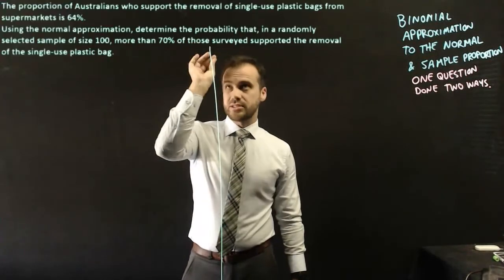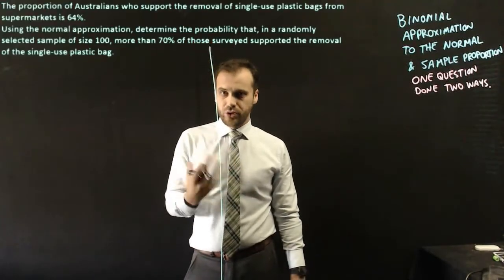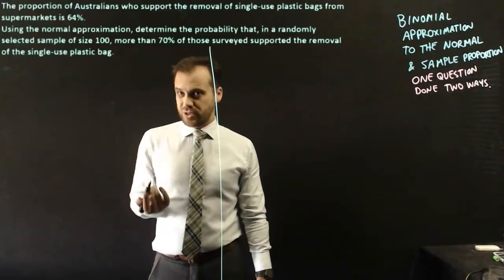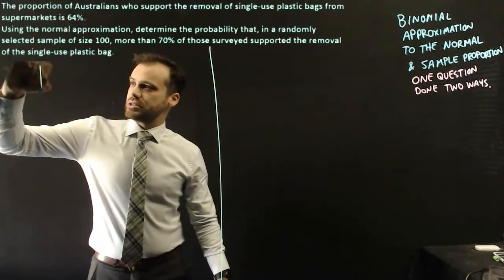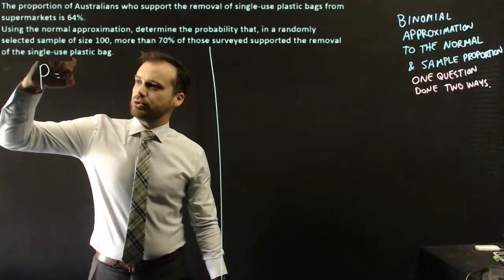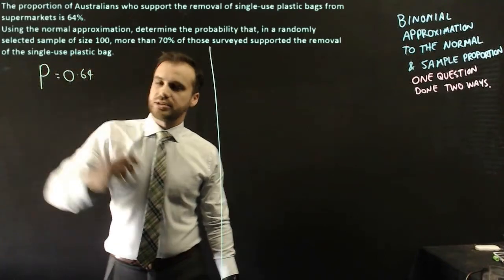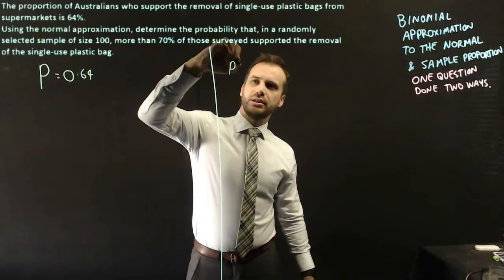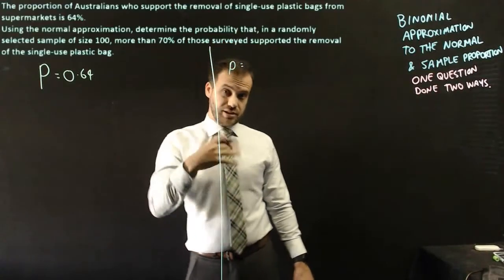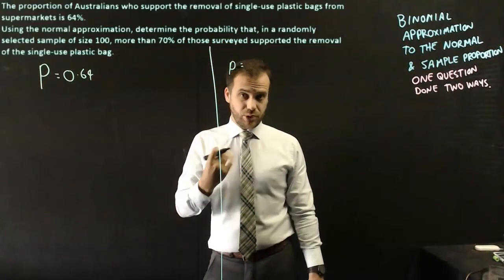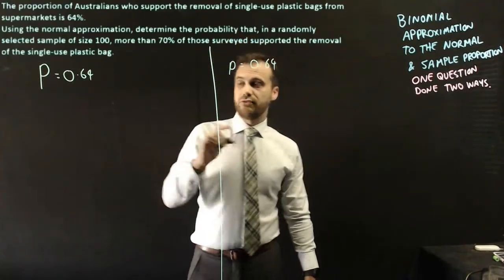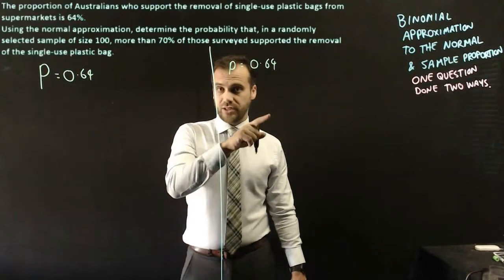The question says that 64% of people approve of the removal of plastic bags. We can interpret that as two different things. We can interpret it as the population proportion being equal to 0.64, or we could interpret it as the probability of success, if success is choosing a person who supports plastic bag removal, is 0.64. Both equally valid.